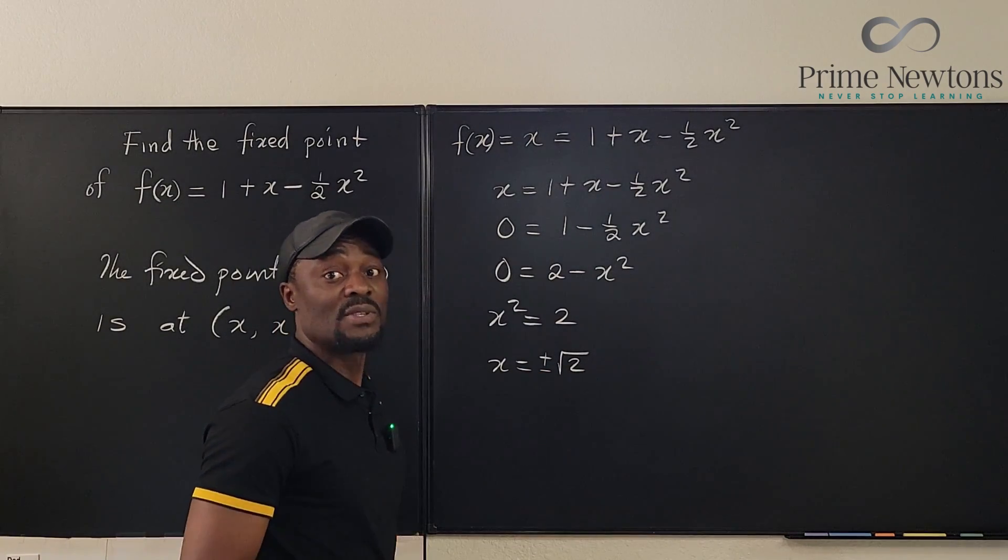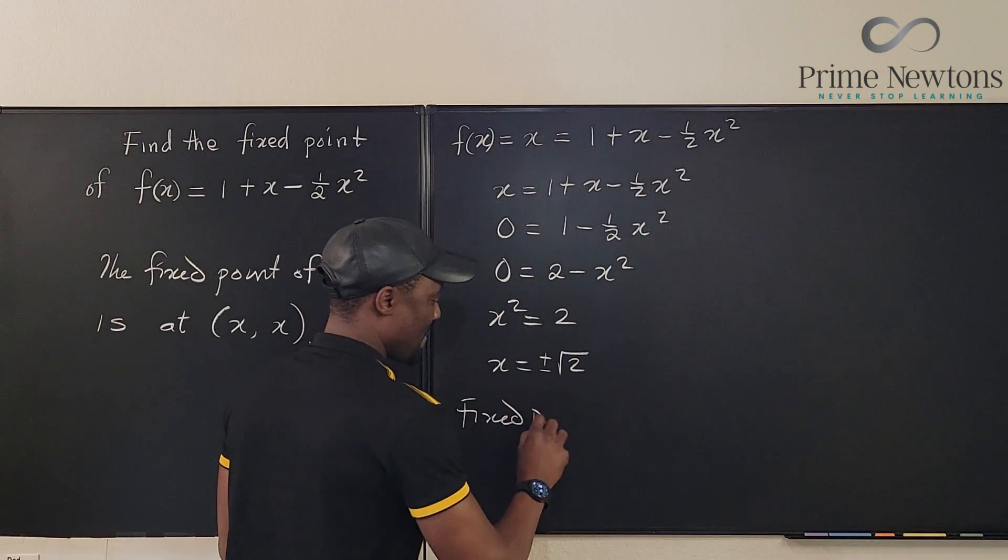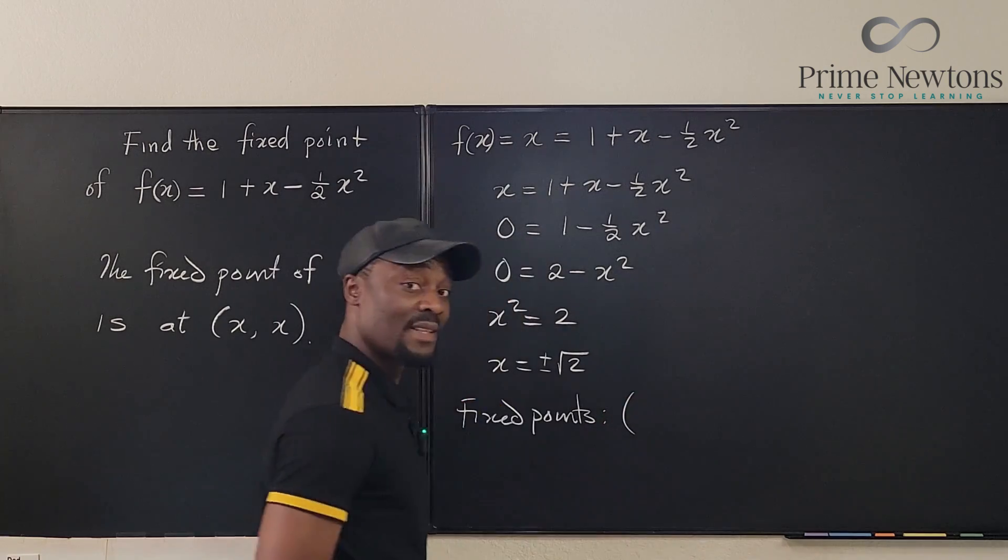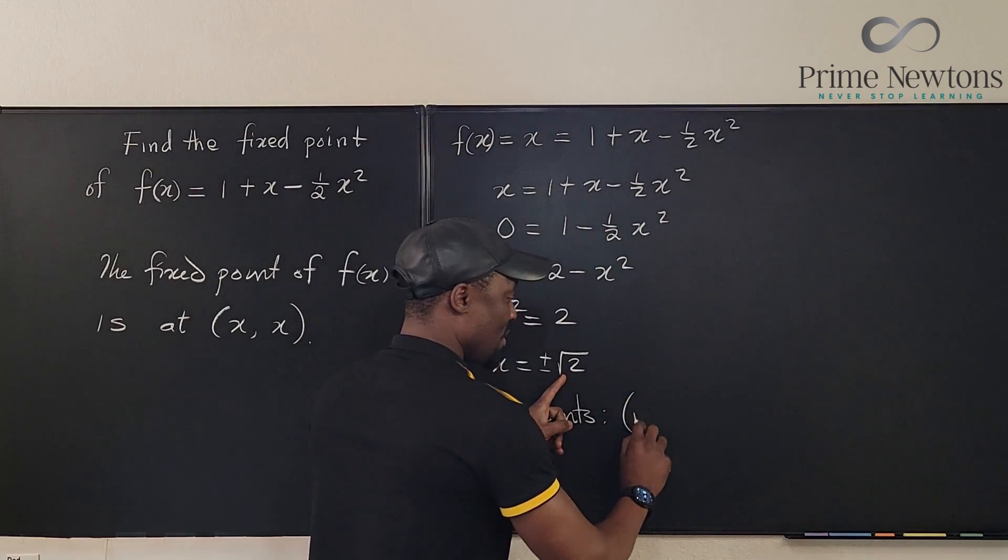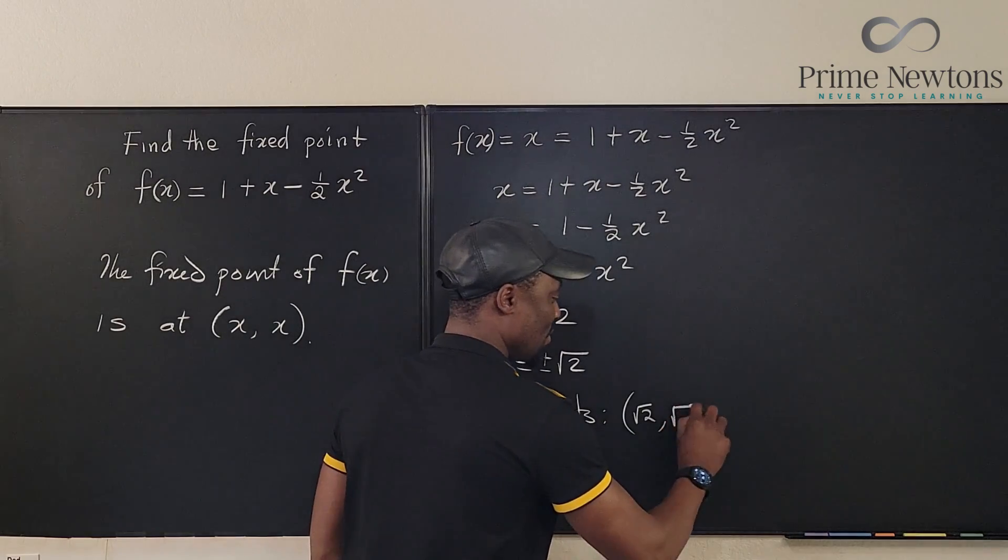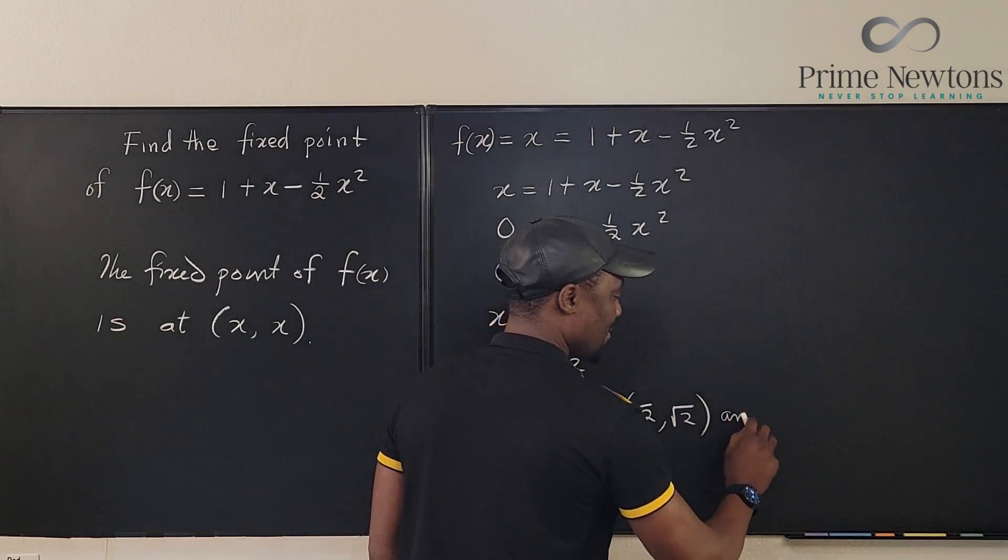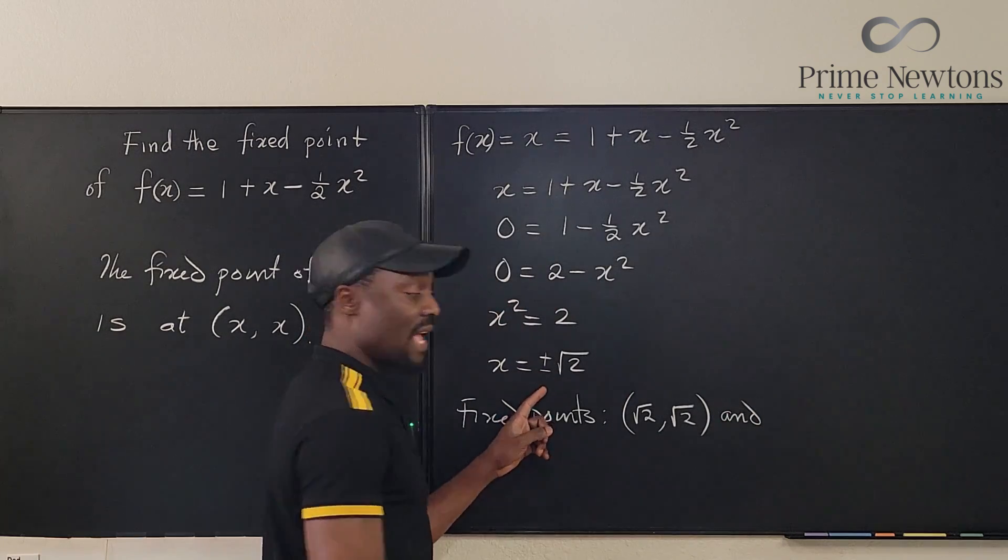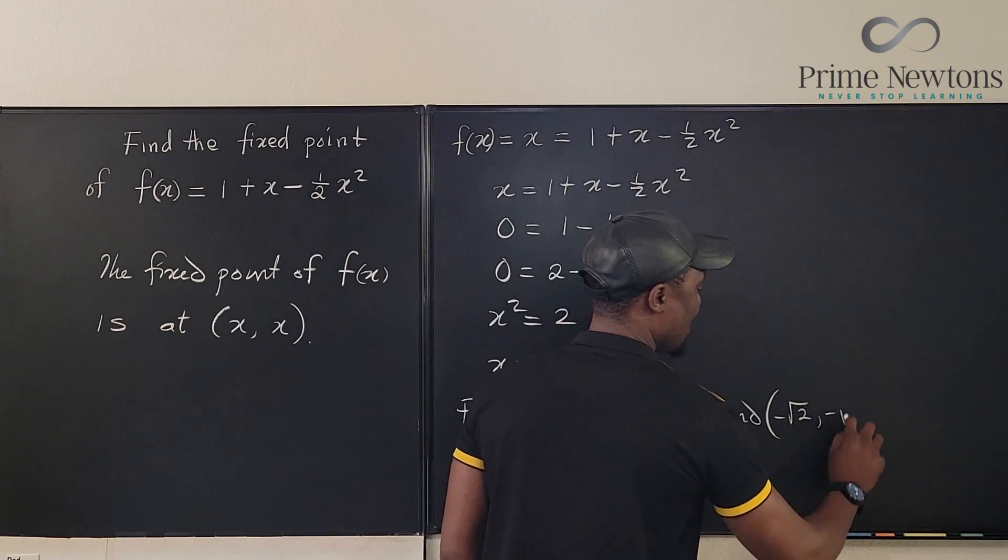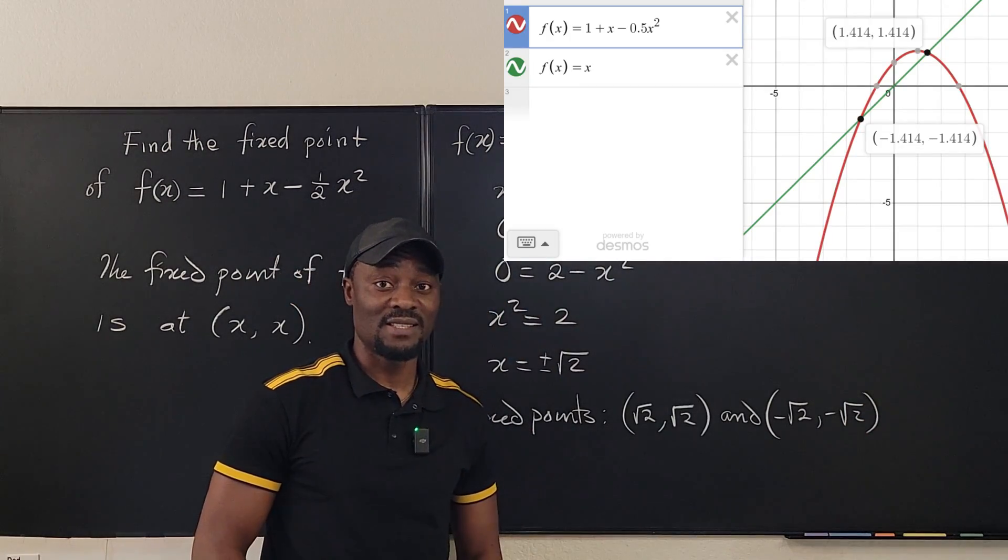And when x equals minus square root of 2. So our fixed points are: first, when x is square root of 2, our output y is also going to be square root of 2. And when x is negative square root of 2, y will also be negative square root of 2. That's it. That's how I lost 10 points.